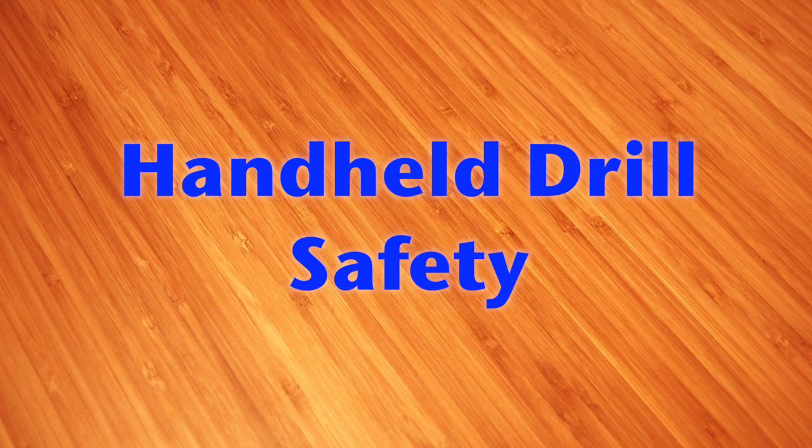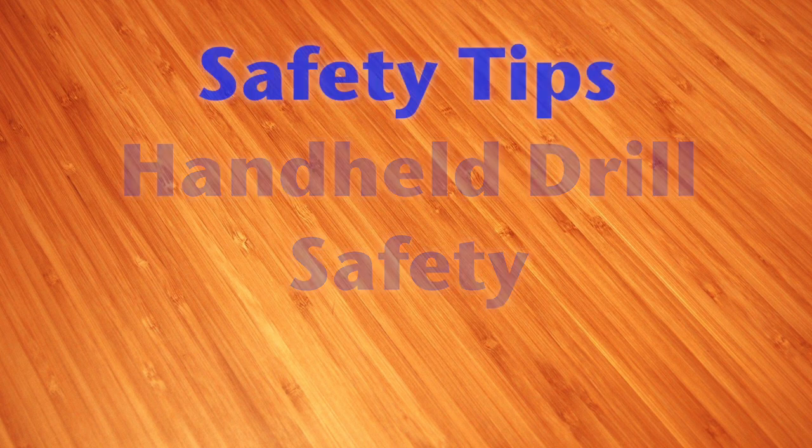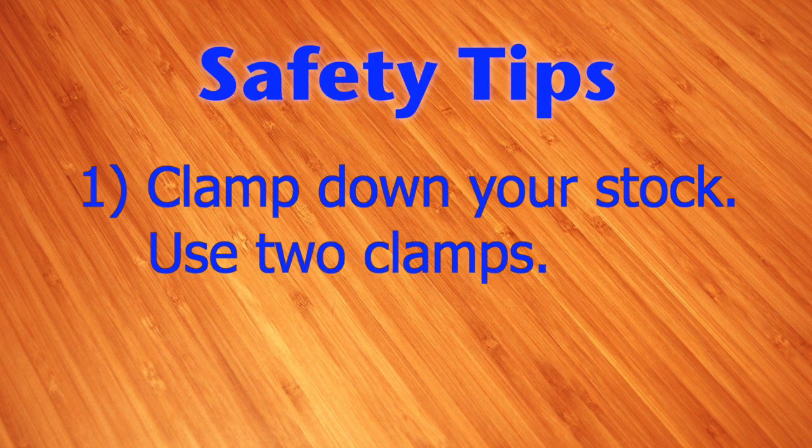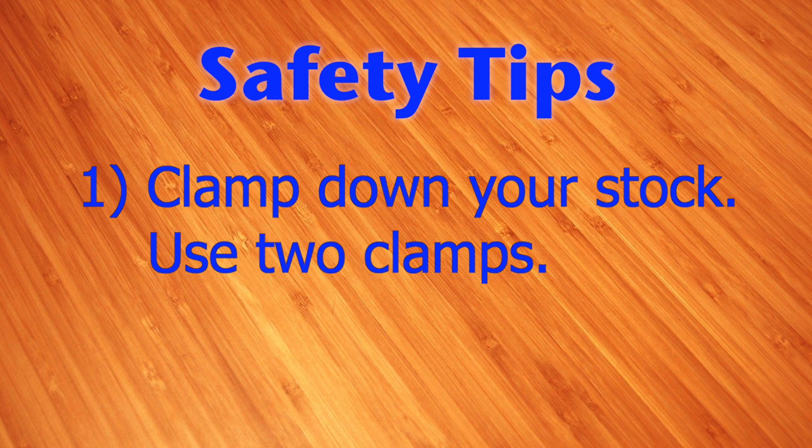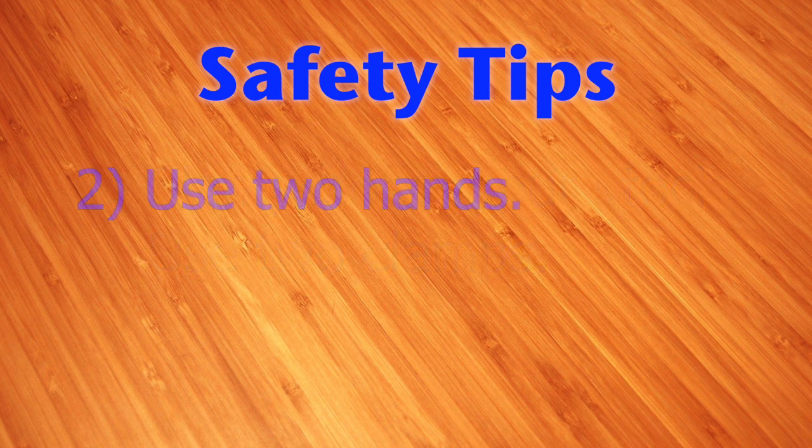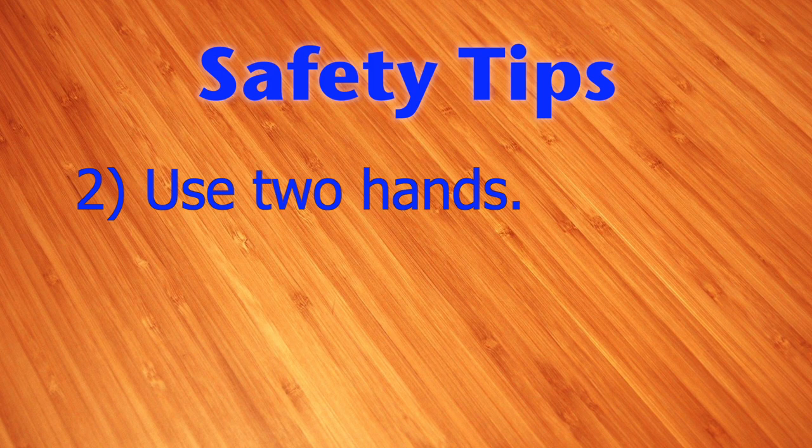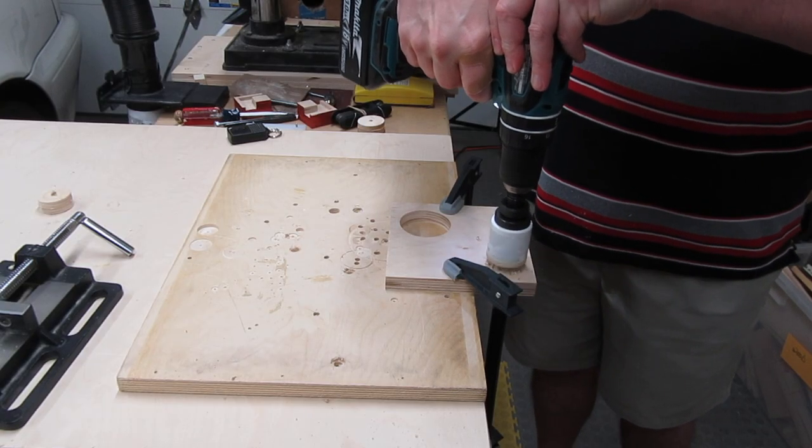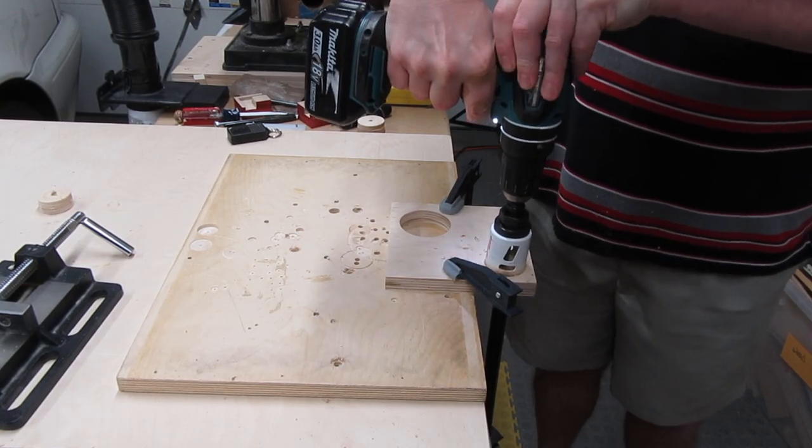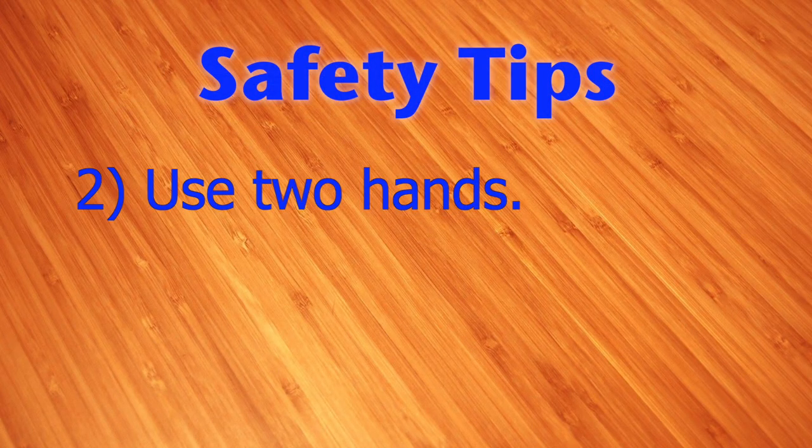Here's some safety tips when using hole saws with handheld drills. As I mentioned earlier, whenever possible, always clamp down your stock. Use two clamps to be safe whenever you can. Always keep two hands on the drill. It's fairly common for the saw to get stuck in the wood, and when it does, it can rip the drill right out of your hand, and it's easy to hurt your wrist.